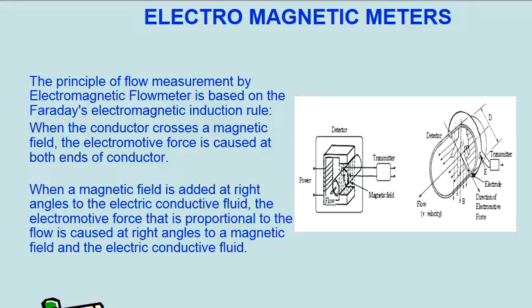The principle of flow measurement by electromagnetic flow meter is based on Faraday's electromagnetic induction rule. When the conductor crosses a magnetic field, the electromotive force is caused at both ends of conductor.